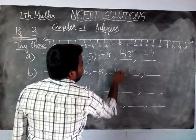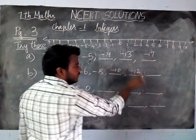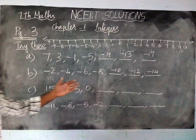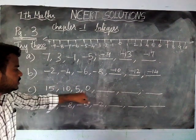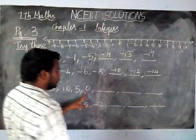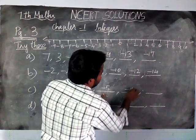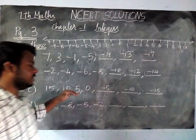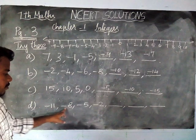Next pattern: 15, 10, 5, 0. The difference is 5. After 0, the next is -5, then -10, then -15. The common difference is 5.